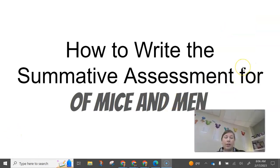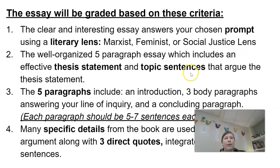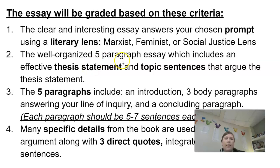This is how to write your summative essay for Of Mice and Men. This goes over what you should expect for the introduction and conclusion and what we should see in your body paragraphs. Remember that you're picking one of the lines of inquiry and you have to examine the book through either the Marxist, feminist, or social justice lens — so either power, social class, gender, or social justice, looking at race specifically. You're writing a five-paragraph essay.